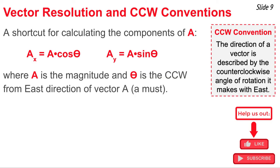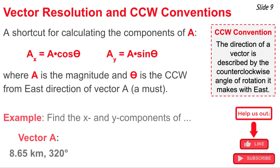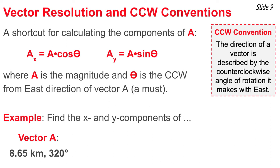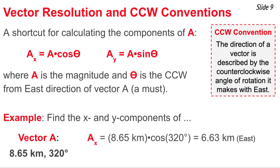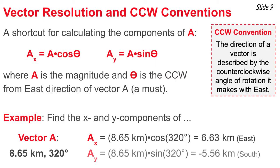Here's one reason why — it presents a shortcut for calculating the values for the components of any vector a. The shortcut equations are ax = a·cosine(θ) and ay = a·sine(θ). These equations always work provided that the angle theta is the counterclockwise from east direction of the vector. Here's an example: to find the components of vector a with magnitude 8.65 kilometers and direction 320 degrees counterclockwise from east — for ax, I calculate 8.65 times cosine of 320 degrees, which gives positive 6.63 kilometers, meaning east. For ay, it's 8.65 times sine of 320 degrees, which gives negative 5.56 kilometers, indicating a southward component.